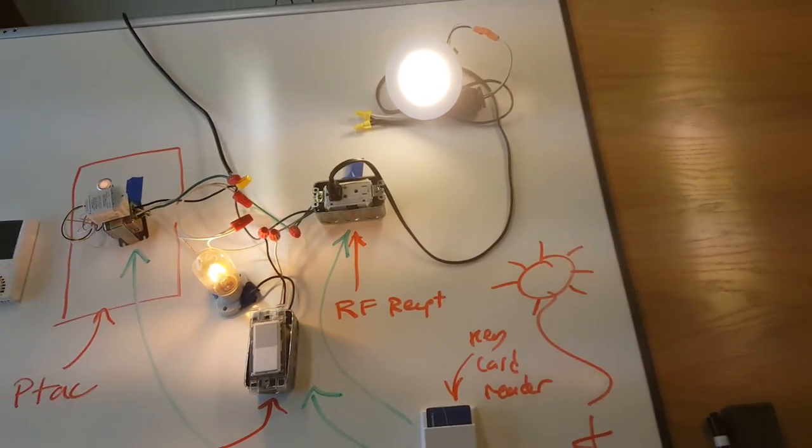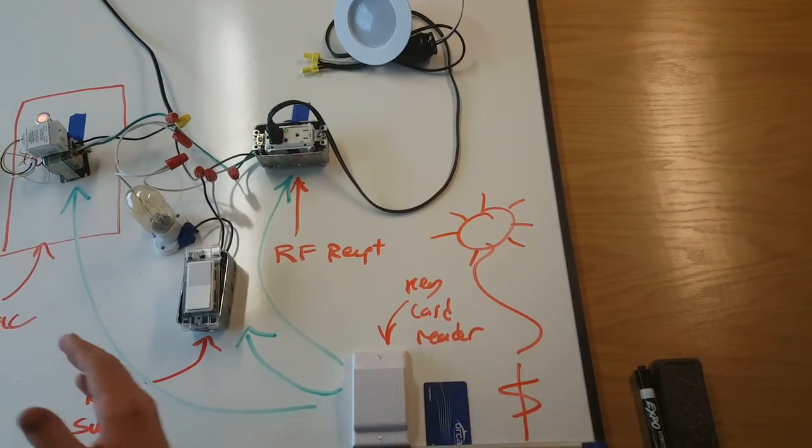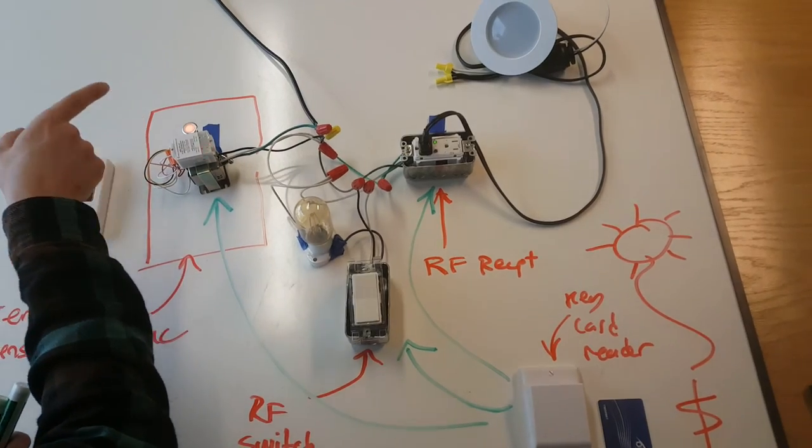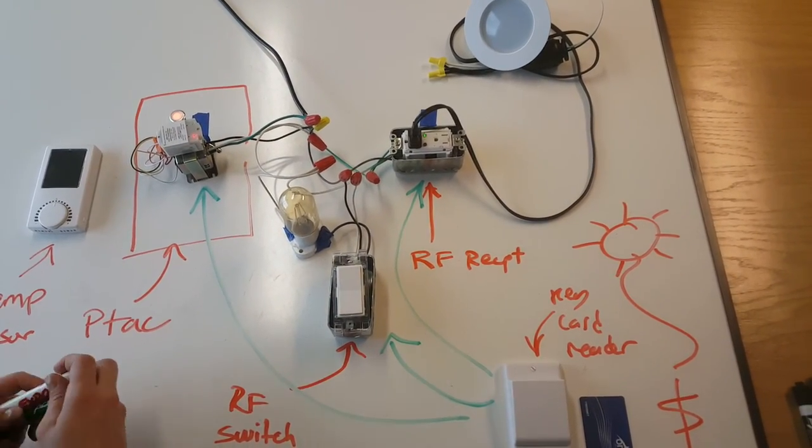When you walk out of the room, you remove your key card. The devices turn off. You see the PTAC, the light is still on, but will shortly turn off. It has a 30 second delay.